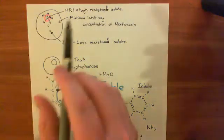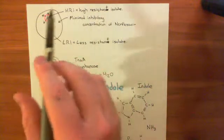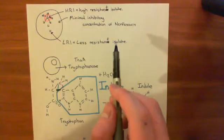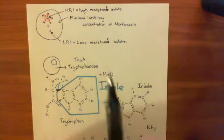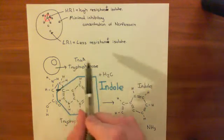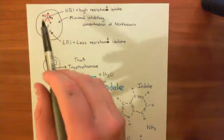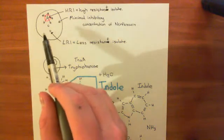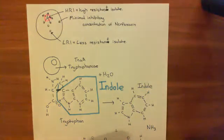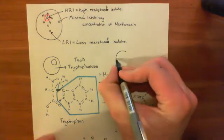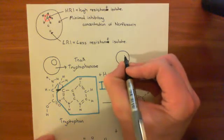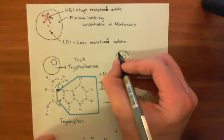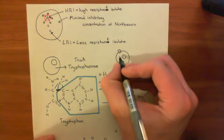But if I put this on a plate with this high-resistance isolate, which is resistant to norfloxacin — its protein synthesis would not be inhibited, it's still producing proteins, it produces this tryptophanase, and now it sends out this indole — and this indole goes to the less-resistant isolate and causes it to become resistant to norfloxacin. The way it is believed to cause resistance is that it causes the export of drug efflux pumps, basically.